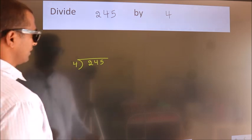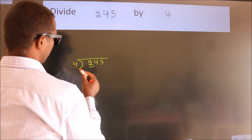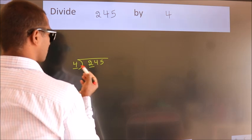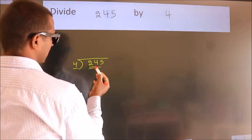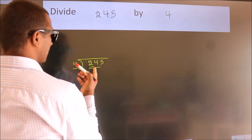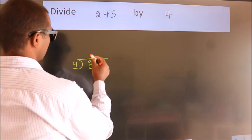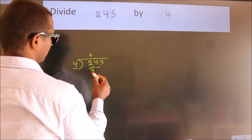Next. Here we have 2. Here 4. 2 smaller than 4. So, we should take 2 numbers. 24. When do we get 24? In 4 table. 4, 6, 24.